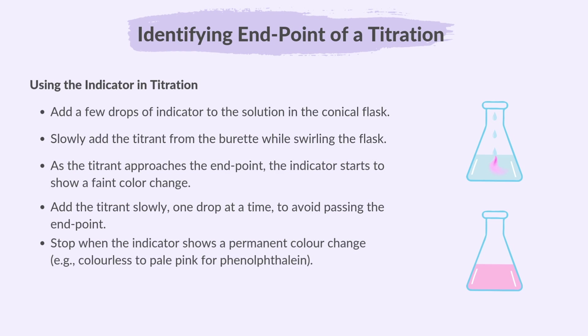Stop when the indicator shows a permanent color change — for example, colorless to pale pink for phenolphthalein. Record the exact volume of titrant used at the end point. This ensures precise identification of the end point during a titration.